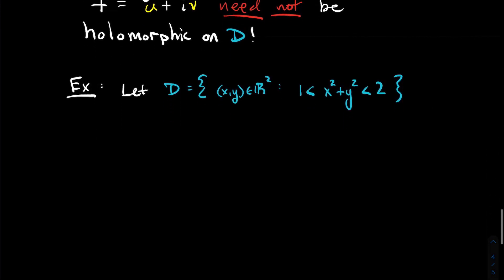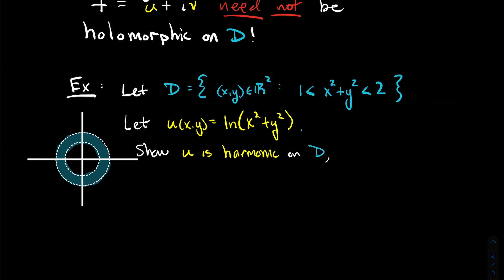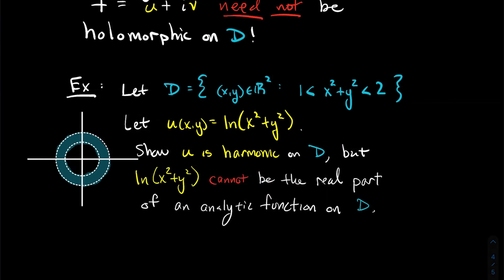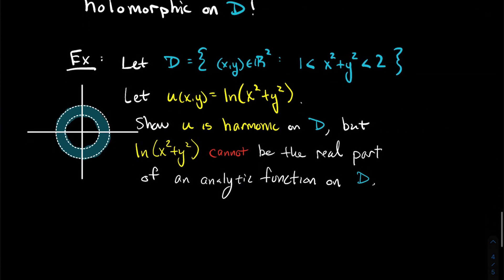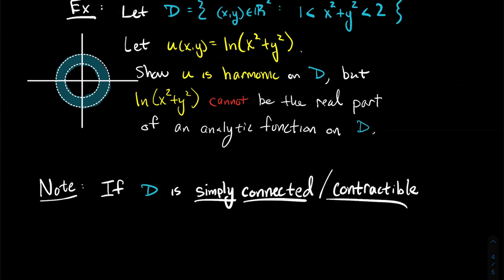I'll just set up a counterexample. Let's take D to be an annulus — a donut shape between two circles. Let U be the function natural log of (x² + y²). You can show that U is harmonic on this domain. But you should also try to show that natural log of (x² + y²) can't be the real part of any analytic function on this domain. That would show that the converse doesn't hold in general. This annulus has a big hole in the middle, so what if we look at nicer domains?